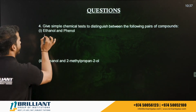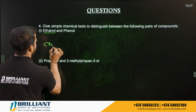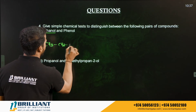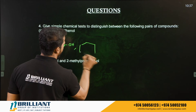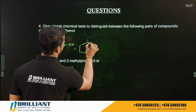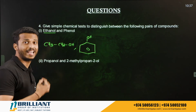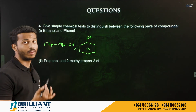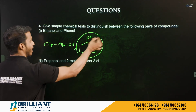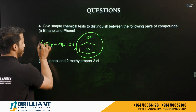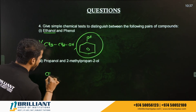Question: Distinguish between ethanol (CH₃CH₂OH) and phenol (benzene–OH). Again, the neutral ferric chloride test is used because phenol gives a violet-colored complex with FeCl₃, while ethanol cannot.